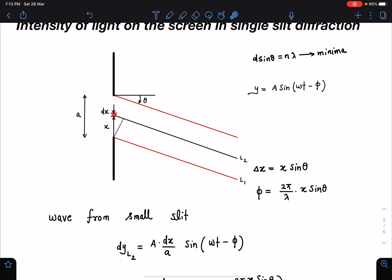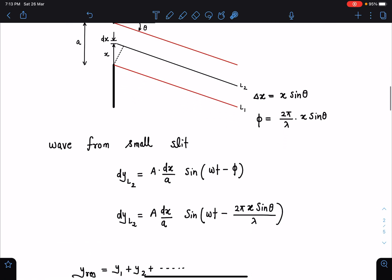I can write the wave travelling from this small source L2, I can write this as dY_L2 as distribution of this amplitude A dx by A sin omega t minus phi where phi is known to us. If I substitute the value of this phi, this small light ray L2 is appearing like this. Its distributed amplitude as A dx by small a, small a is the slit width.